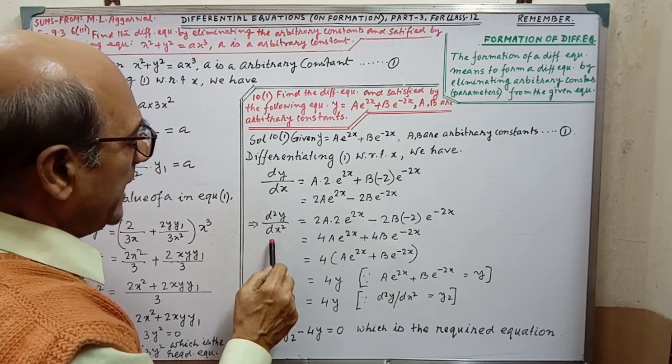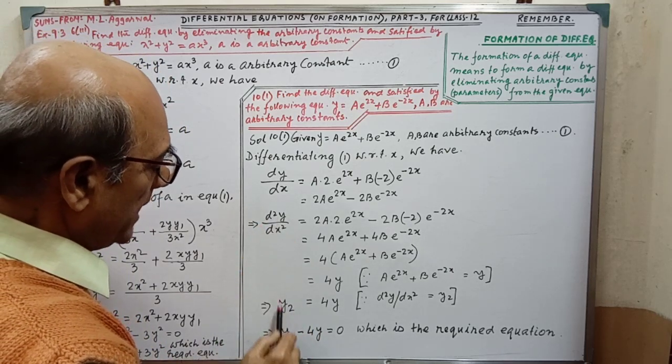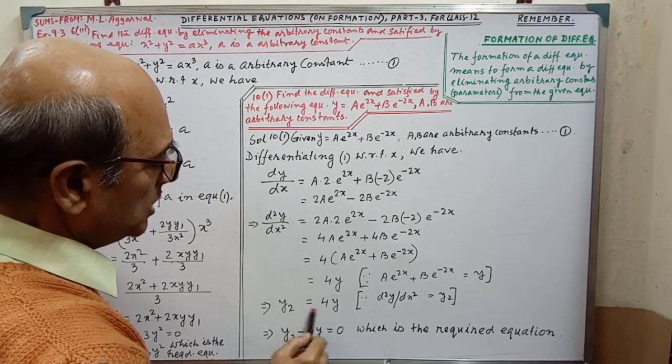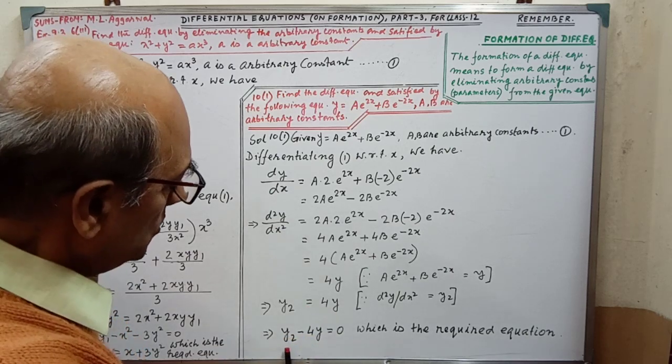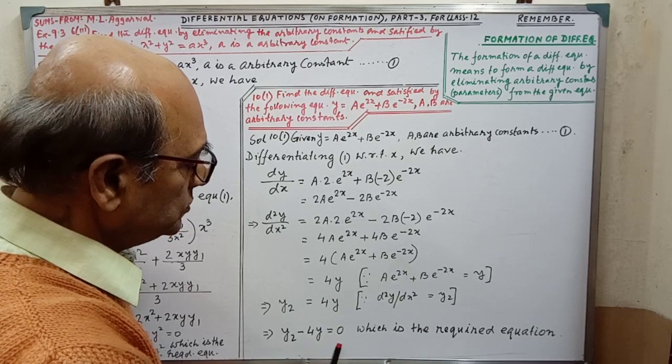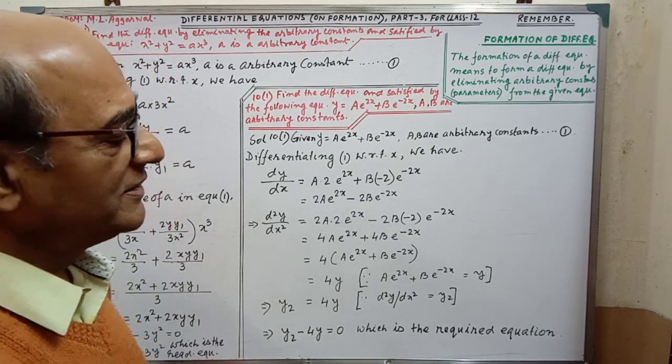Then, d square y by dx square, that we may write y2. So, equal to 4y. Then, by simplifying, we are getting y2 minus 4y equal to 0, which is the required equation.